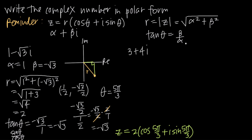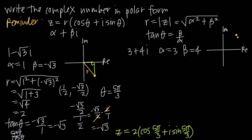Let's do one more example with the complex number 3 plus 4i. Right away, alpha equals 3 and beta equals 4. Plotting in the Argand plane, we go positive 3 along the real axis and positive 4 along the imaginary axis, landing in the first quadrant. So we'll look in the first quadrant of the unit circle for theta. To find r: r equals the square root of 3 squared plus 4 squared, which is the square root of 9 plus 16, or the square root of 25, which equals 5.